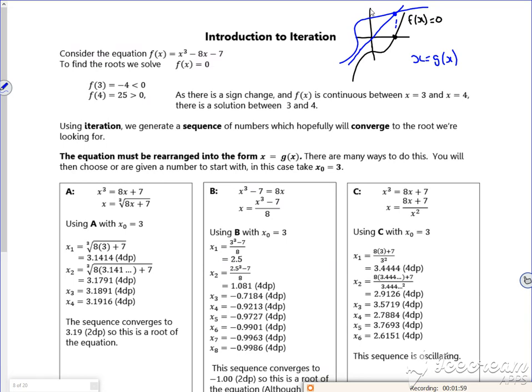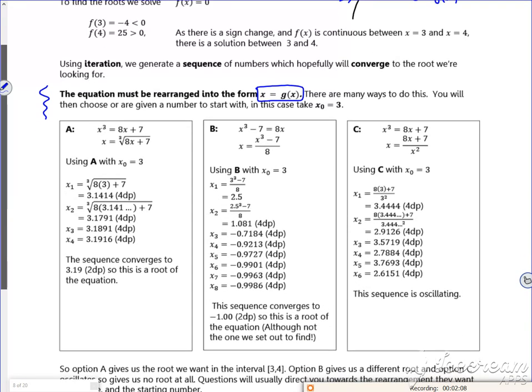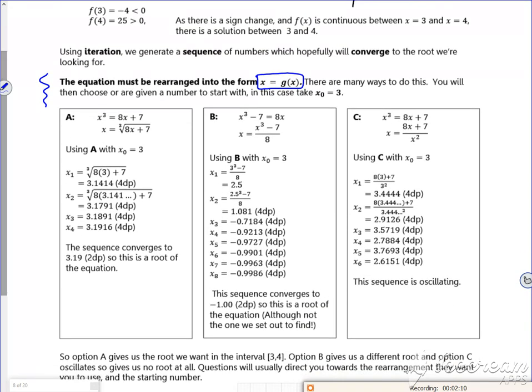So it says here, the equation must be rearranged into the form x equals g(x). So you can do it loads of different ways, and we don't really go into it, but there's reasons why some do and some don't.